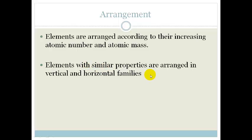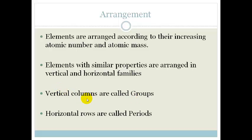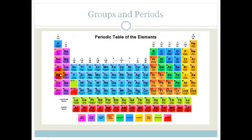Elements with similar properties are arranged in vertical and horizontal families. The vertical columns are called groups and the horizontal rows are called periods. So these are your groups.